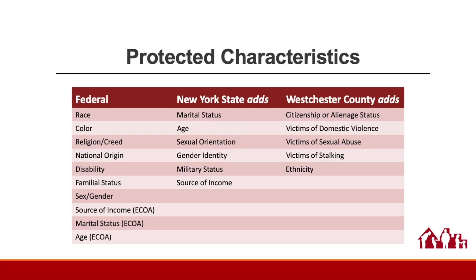You may have seen a chart like this before. It lists out the protected characteristics. ECOA refers to the characteristics protected by that law as protected bases. In the fair housing world, they are typically referred to as protected classes, or protected characteristics, or even protected groups. We'll use the terms pretty interchangeably — they're all referring to the same thing.